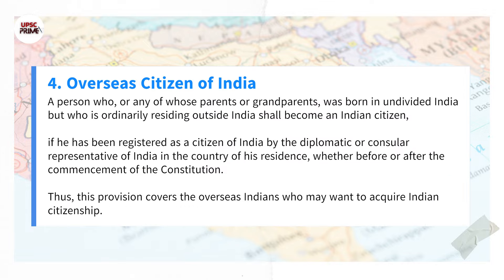Category 4: A person who, or any of whose parents or grandparents, was born in undivided India but who is ordinarily residing outside India, shall become an Indian citizen if he has been registered as a citizen of India by the diplomatic or consular representative of India in the country of his residence, whether before or after the commencement of the constitution. Thus, this provision covers the overseas Indians who may want to acquire Indian citizenship.